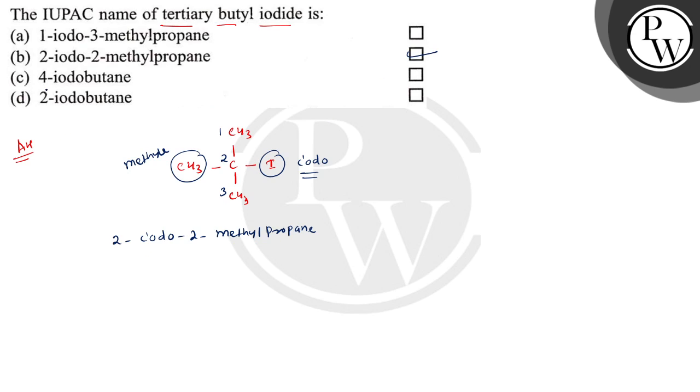If you see the other options, 4-iodobutane and 2-iodobutane - butane is not possible because it is a branched form and the total number of carbons is 4 in a branched form. So the long chain will not be butane. Butane is not possible here.